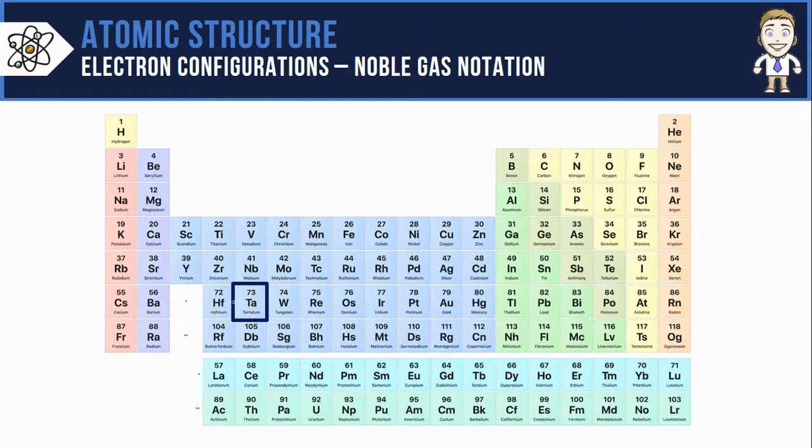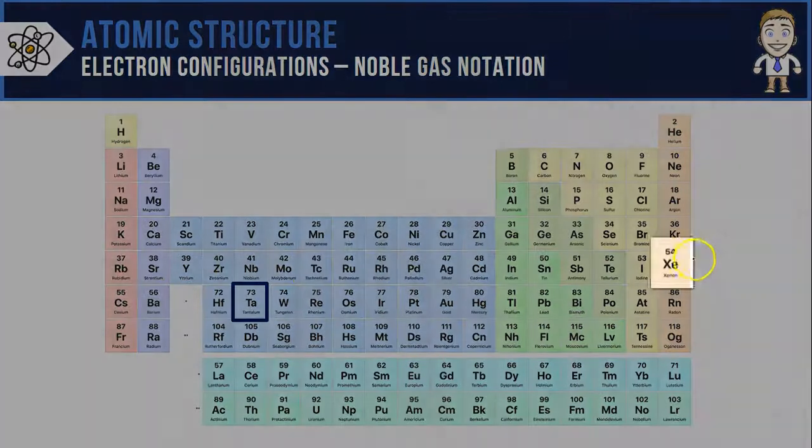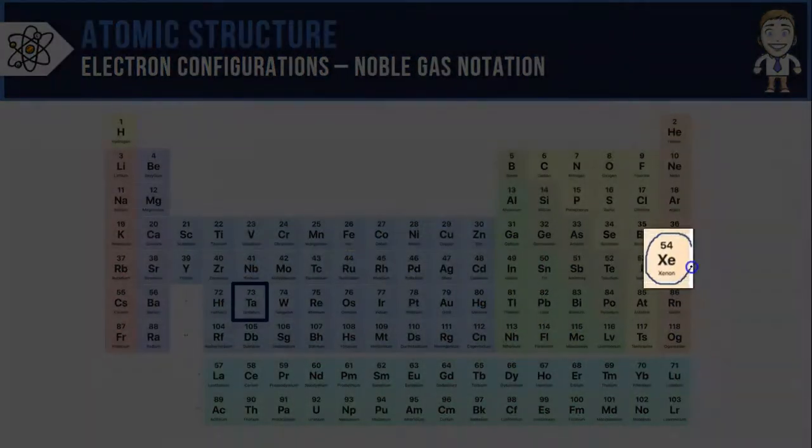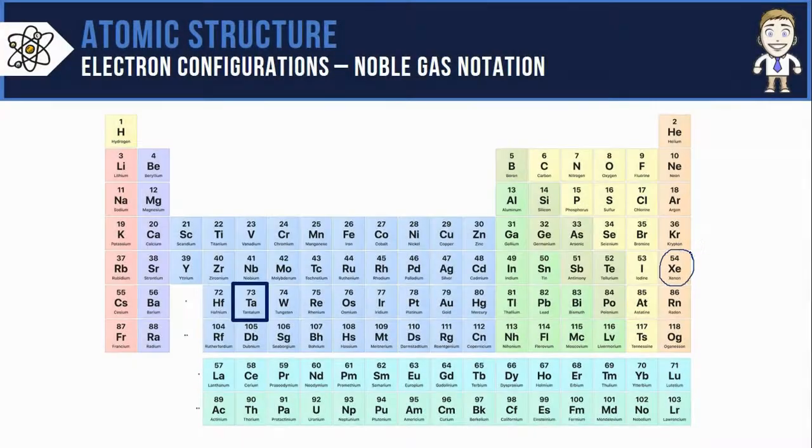If you're having trouble finding that, a nice easy way to do it is to count backwards from 73 until you hit the first noble gas. So counting backwards from 73, 72, this represents 71 through 57, 56, 55. The biggest noble gas that is still smaller than tantalum is xenon.